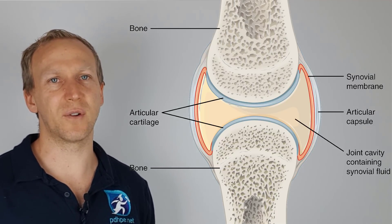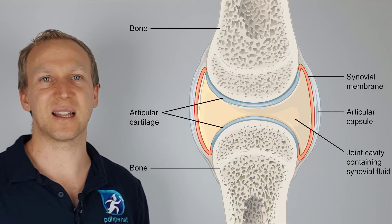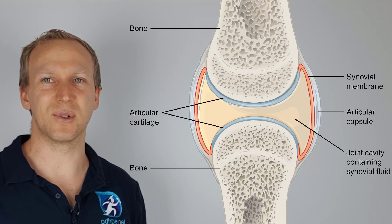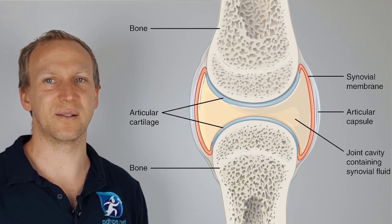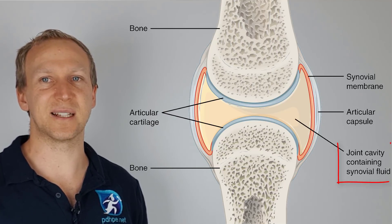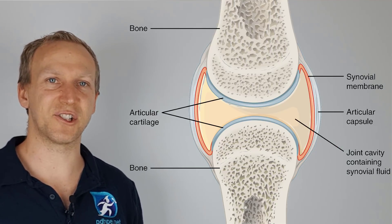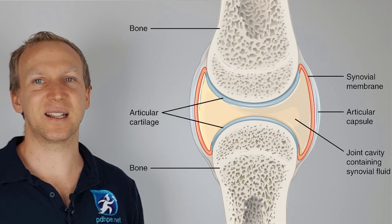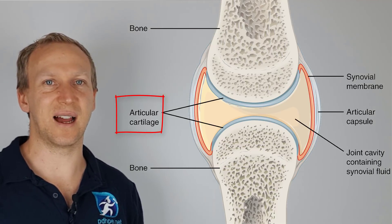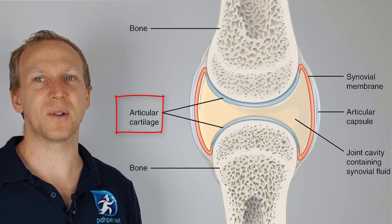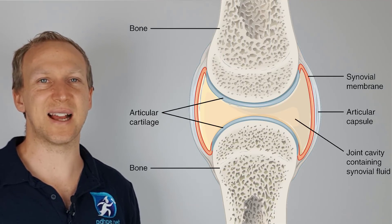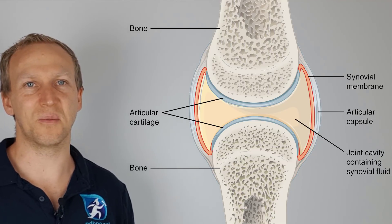The articular capsule is essentially there to hold the synovial fluid in the joint, which allows for stability and lubrication. The synovial fluid itself is the fluid in that joint cavity — it lubricates, cushions, and nourishes the joint. Finally, the articular cartilage, also known as hyaline cartilage in most synovial joints, is smooth white tissue that covers the ends of the bones as they come together, allowing for easy, smooth movement. The function of synovial joints is essentially to provide movement and also stability.